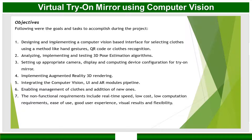After 3D pose estimation, the third step is that in this whole process we have to set up the camera, display, and computing device. Moving on: clothes selection, 3D pose estimation, and then augmented reality, in which we draw clothing models over the user's background to give the final outlook of the clothing on the user.